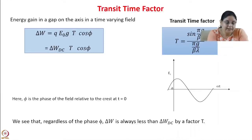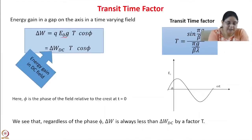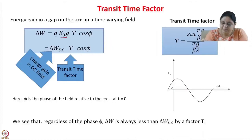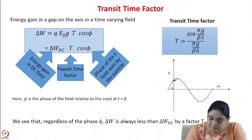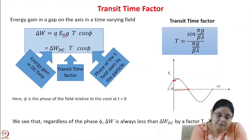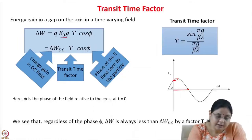The energy gain in the gap is Q·E₀·g·T·cosφ. Here Q·E₀·g is simply the energy gain in the DC field. In addition, we have two more terms: the transit time factor T = sin(πg/βλ)/(πg/βλ), and cosφ. The cosφ term comes in because it depends on the phase of the field seen by the charge particle — at φ = 0 it sees maximum field, at φ = π/2 it sees zero field.